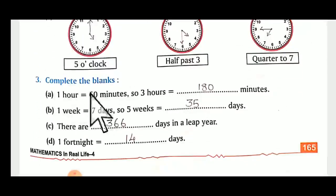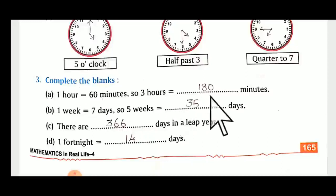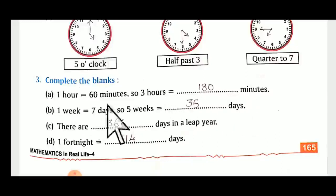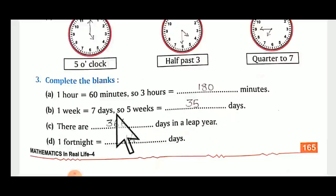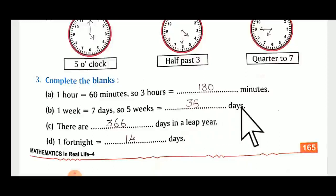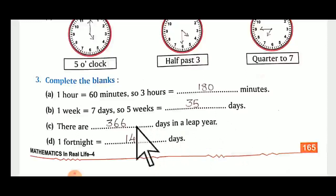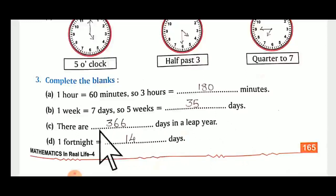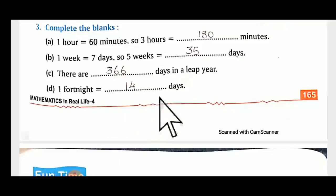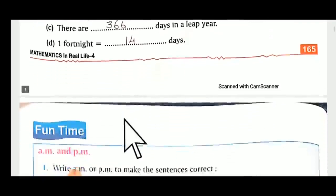Complete the blanks: one hour equals sixty minutes, so three hours equals one hundred and eighty minutes — three multiplied by sixty. One week equals seven days, so five weeks equals thirty-five days. There are three hundred and sixty-six days in a leap year; a regular year has three hundred and sixty-five days. One fortnight equals fourteen days.